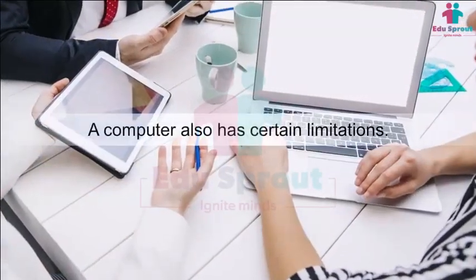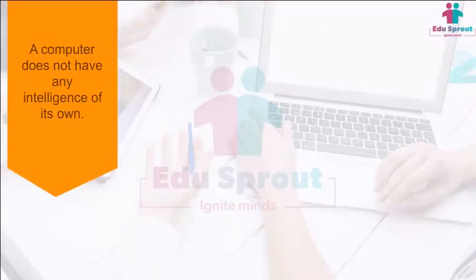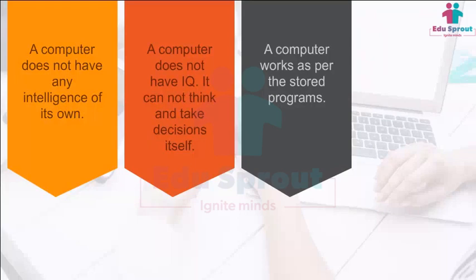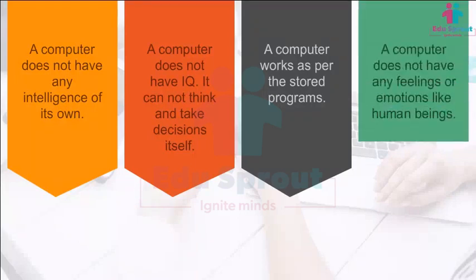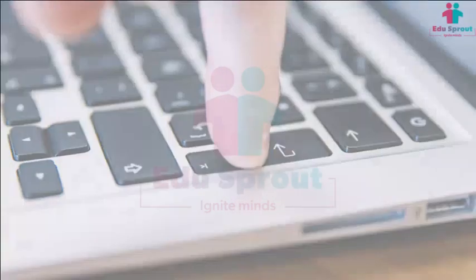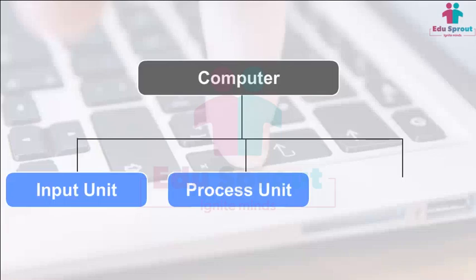A computer also has certain limitations. A computer does not have any intelligence of its own; it cannot think and take decisions itself — it works as per the stored programs. A computer does not have any feelings or emotions like human beings. A computer system consists of three main components: Input Unit, Processing Unit, and Output Unit.